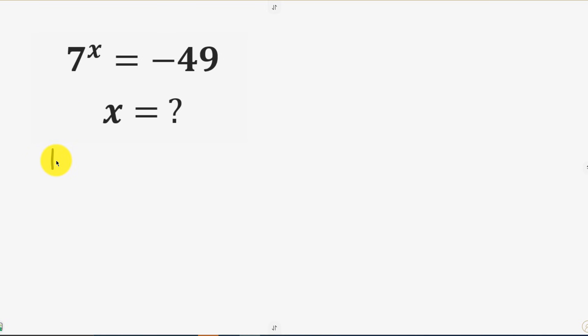So I'll take ln of 7 to the power of x equal to ln of negative 49. This simplifies into ln of 7^x equal to ln of 49 times negative 1.